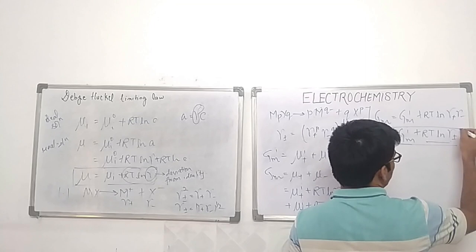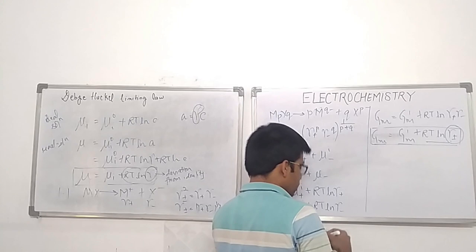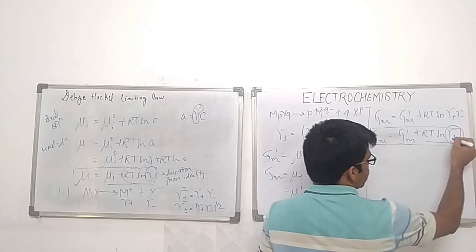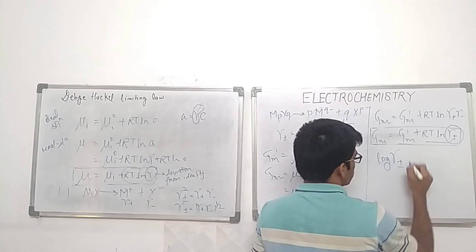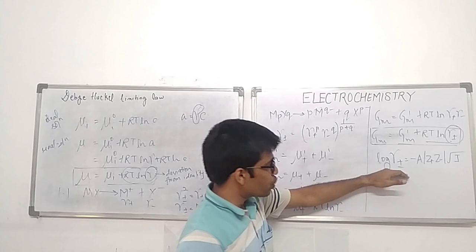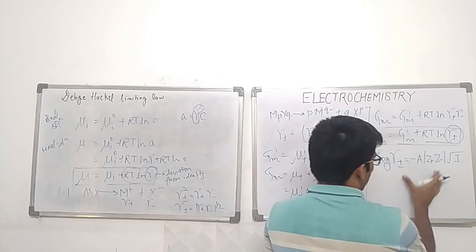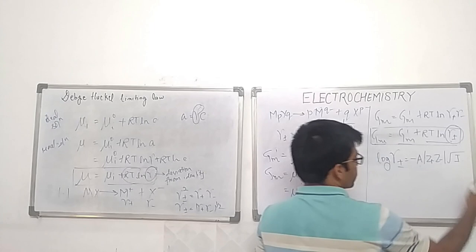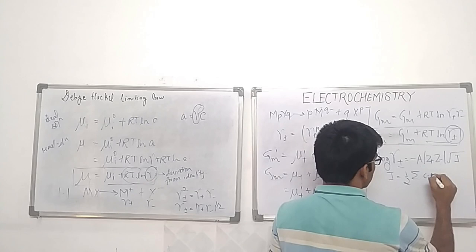The mean ionic activity coefficient can be represented by: log γ± = −A |z₊z₋| √I, where A is a constant, z₊ and z₋ are the charges on the two ions, and I is the ionic strength given by I = ½ Σ cᵢzᵢ².